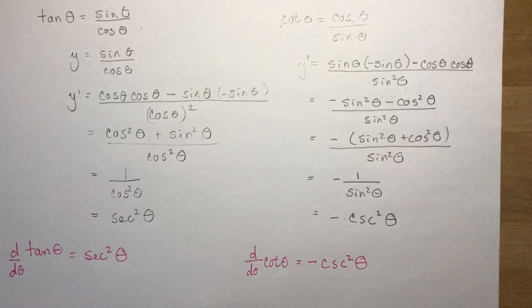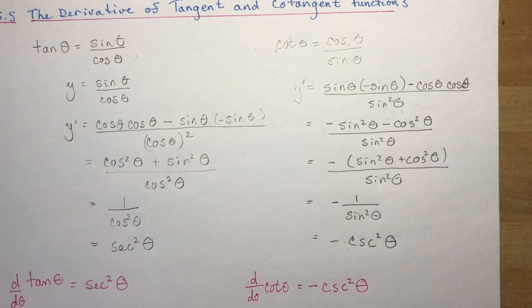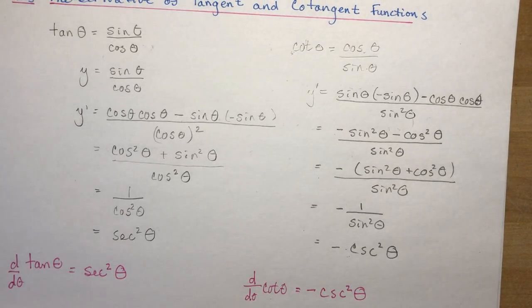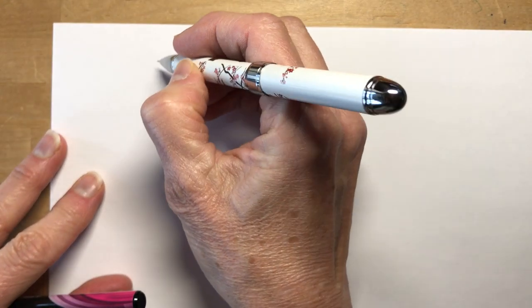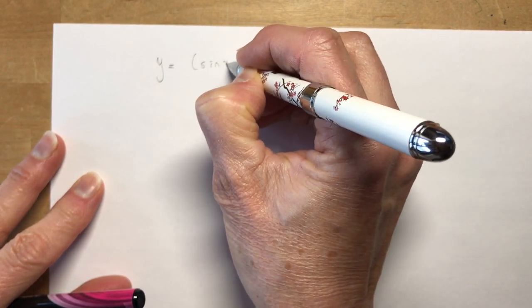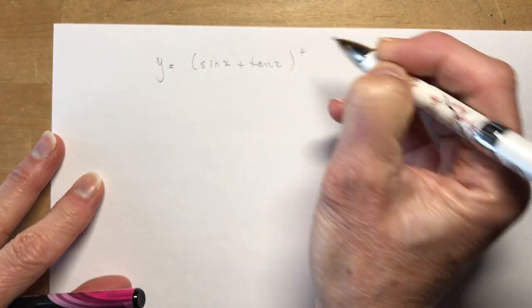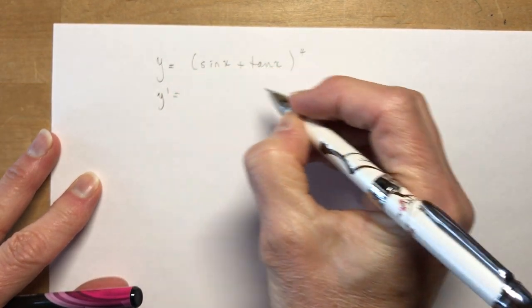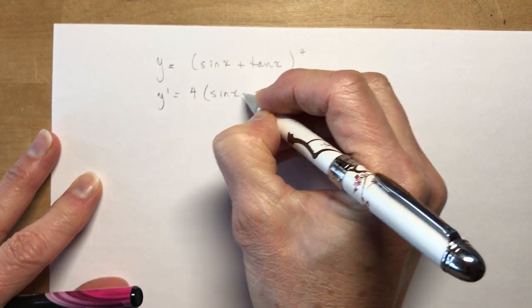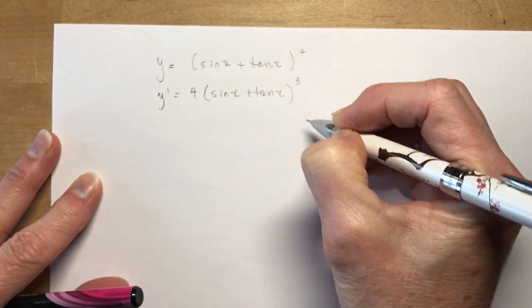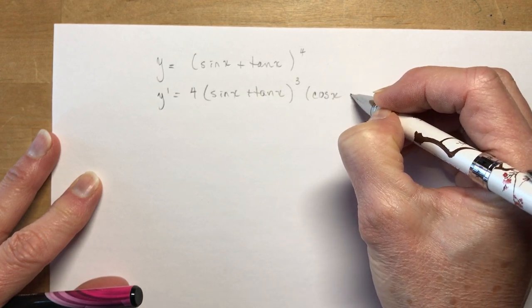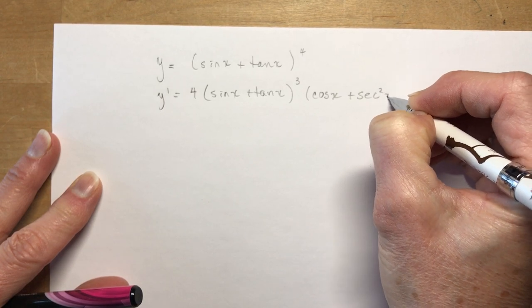Now let's look at some examples. First: y equals (sin x + tan x)⁴. You need to use the chain rule. So y prime equals 4 times (sin x + tan x)³ — leave everything inside the brackets alone — times the derivative of the inside, which is cos x plus secant squared x.